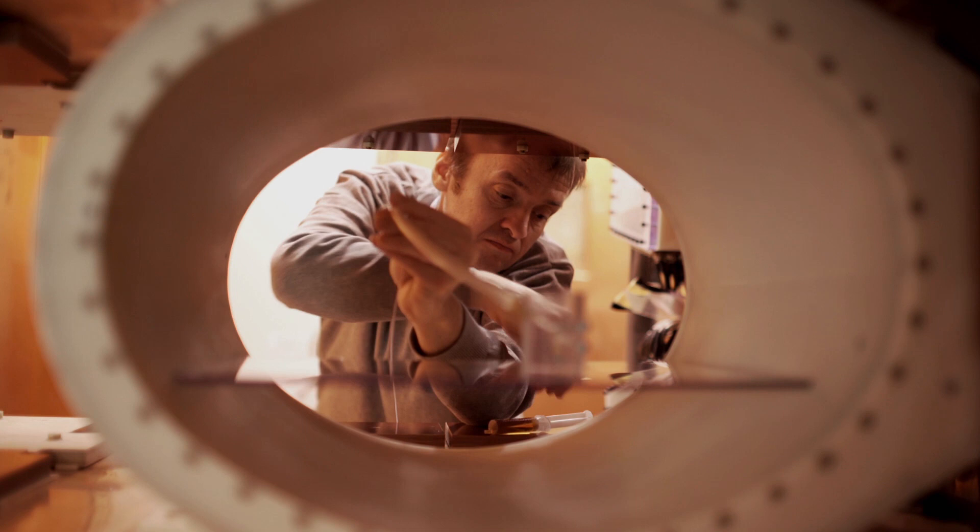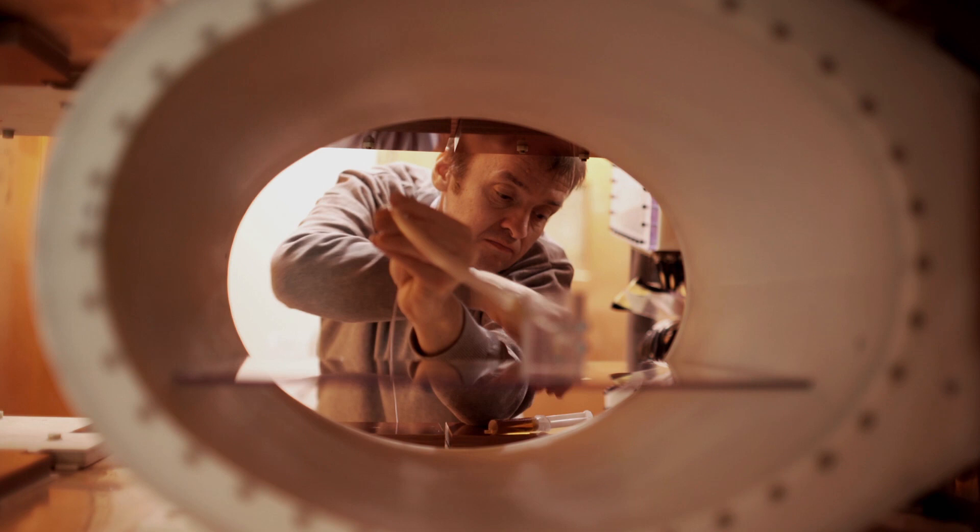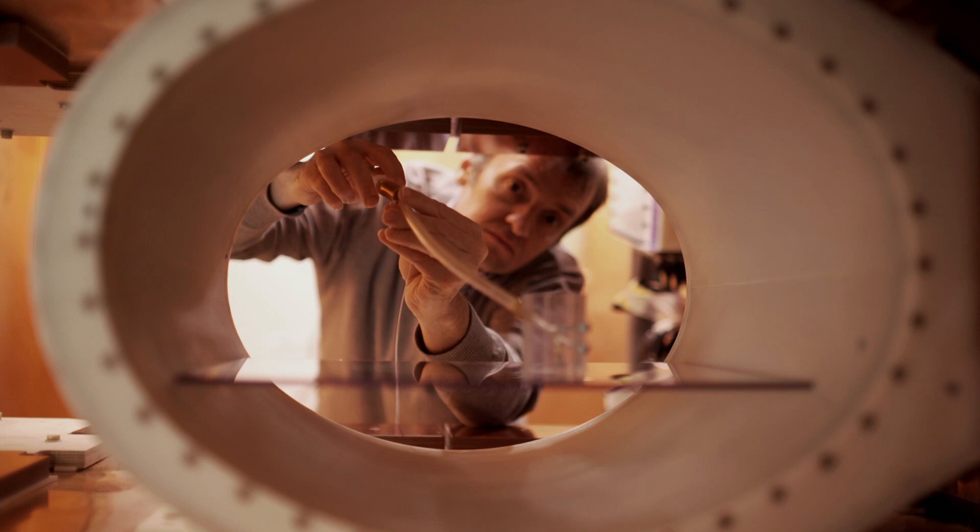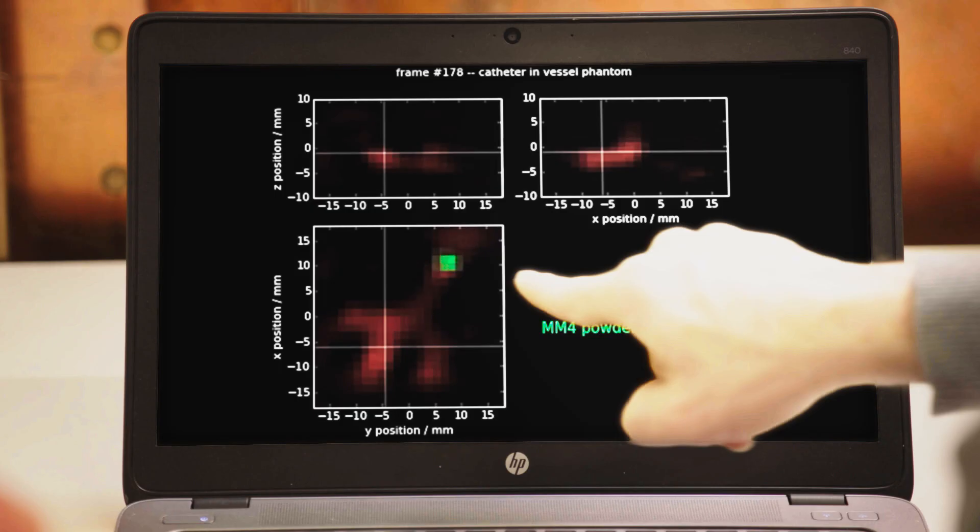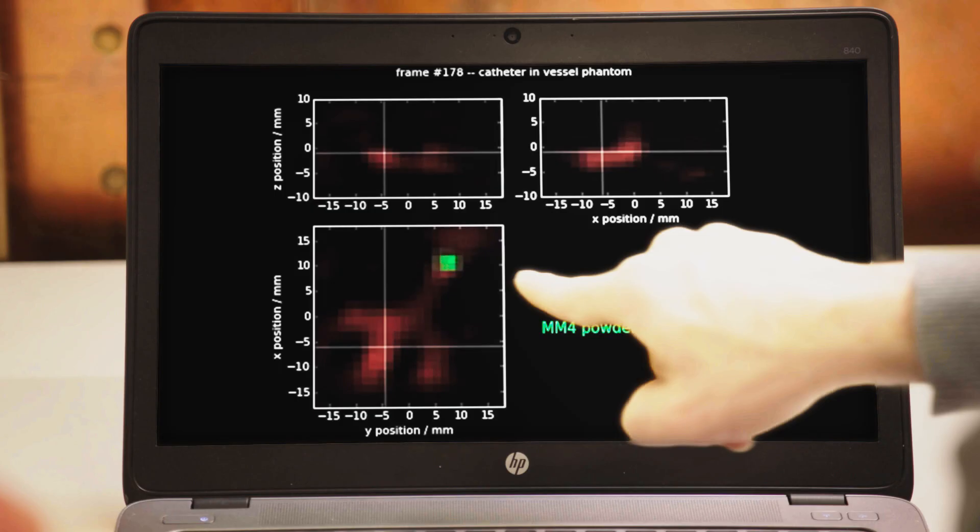Jürgen Weizenecker and Bernhard Gleich use it to demonstrate a further possible application. Here, the ramified glass tubes represent veins. Liquid and a metallic probe are introduced. The researchers then navigate the metal probe through the model solely via the power of magnetism. This is how doctors could one day navigate a catheter through a patient's body using a joystick.